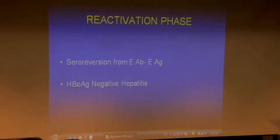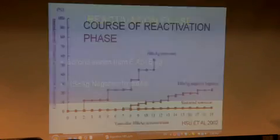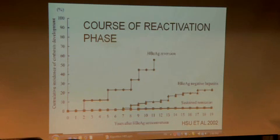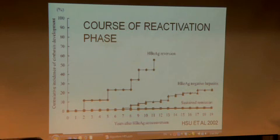In the fourth phase, the reactivation phase, some patients revert from e-antibody back to e-antigen — a seroreversion — usually within the first two years. It's not common but does happen, more commonly when patients are given drugs than when it occurs naturally. The other problem in this phase is the development of e-antigen-negative hepatitis. In early reactivation, one tends to see more e-antigen reversion, and in later phases, more e-antigen-negative hepatitis, which is actually a mutant form of hepatitis B. Age is very important — the older the patient with active hepatitis B, the worse the outcome.